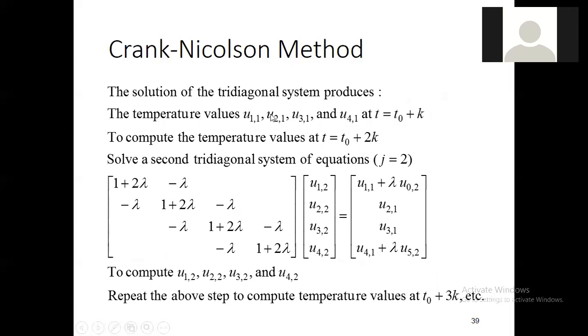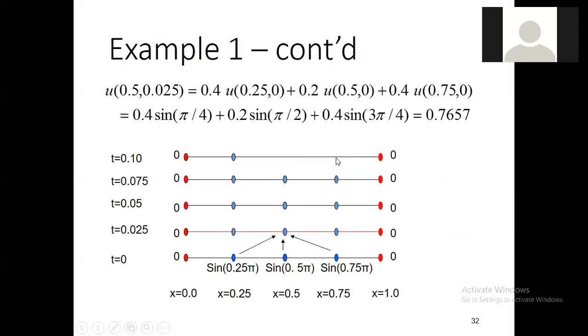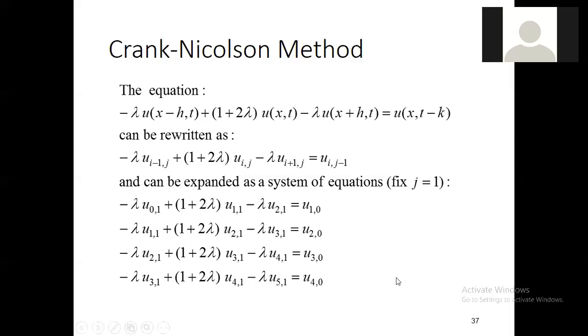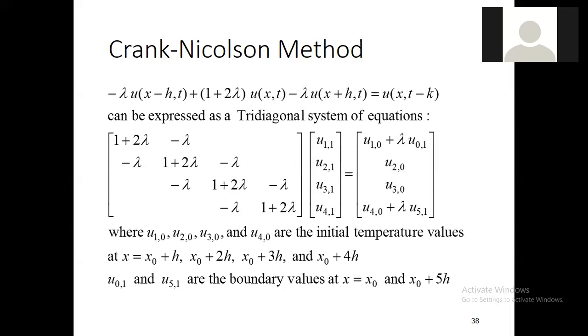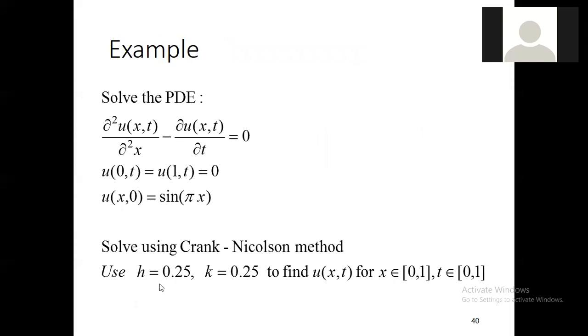Next, the solution of the tri-diagonal system produces the temperature values at time T is equal to T naught plus K. Now, what is happening here? Actually, students, please focus on a very important thing. In the Crank-Nicolson scheme, you will find the temperature or the diffusion at different time steps. How? Let me show you here. Can you see here? Here you have T is equal to 0, T is equal to 0.025, T is equal to 0.05, 0.075 and 0.1. So you will move in time and for every time you will have a matrix. So what will happen when you put J is equal to 1, you will get a system. Then when you put J is equal to 2, you will again get a system. And from this system, you will simplify this system and you will obtain U_{1,2}, U_{2,2}, U_{3,2}, U_{4,2}. So I suggest that you solve it manually.